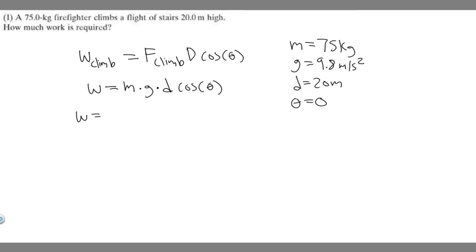So if we plug everything in, 75 times gravity, which is 9.8, times the distance they travel. And when you do this, make sure you have meters, meters per second squared in kilograms. And when you get work, you measure it in joules, by the way, if you didn't know that. And then times the cosine of 0.